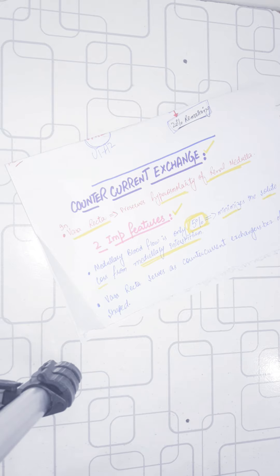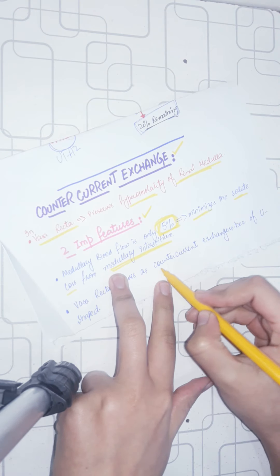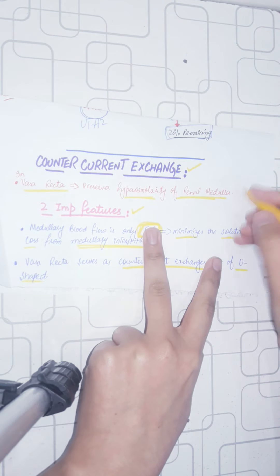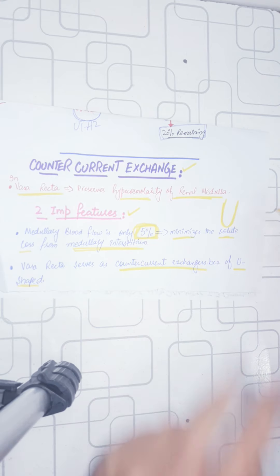The second important feature is that the vasa recta act as a counter-current exchanger. Why do they act as the vasa recta? Because of the U shape. The vasa recta first go down to the lower part in the descending limb, make a loop, and then go up. This is the U shape counter-current exchanger, and the counter-current exchanger helps us with maintaining the hyperosmolarity of the renal medulla.